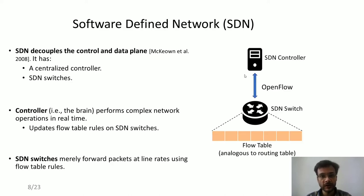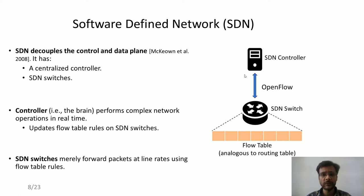Software defined networks are a new networking paradigm wherein the functionality of a single networking device is split into two entities: the control plane and the data plane. The control plane, managed by the SDN controller, is the brain of the network and performs complex operations such as deciding routing policies and access controls. The SDN switch is only given the task of forwarding flows at line rates by matching them based on flow tables, which are analogous to routing tables. The controller exercises its control over the network by updating these flow tables in the SDN switches.